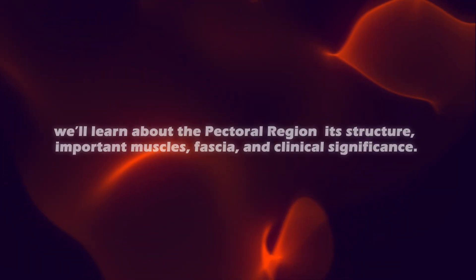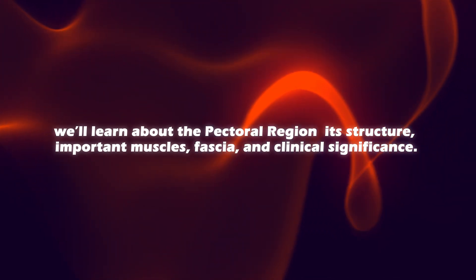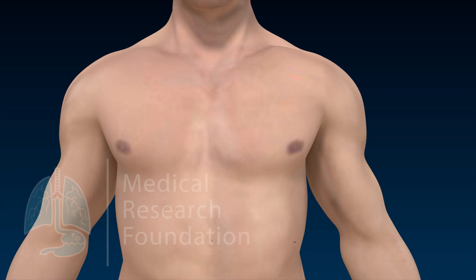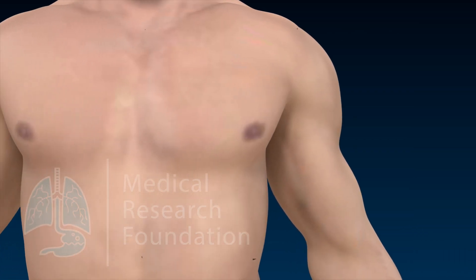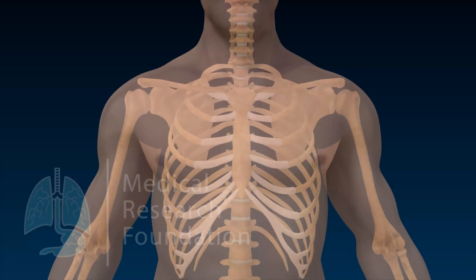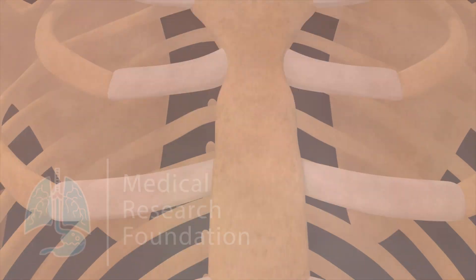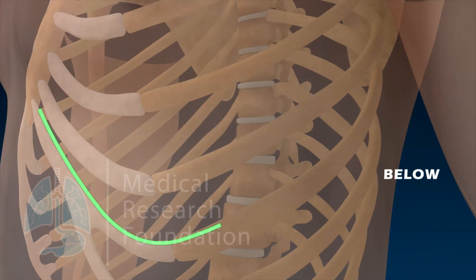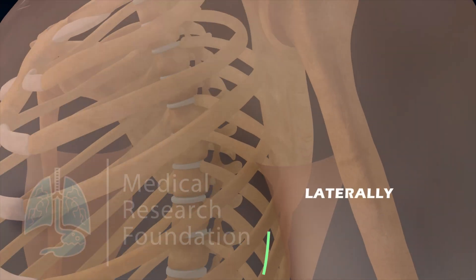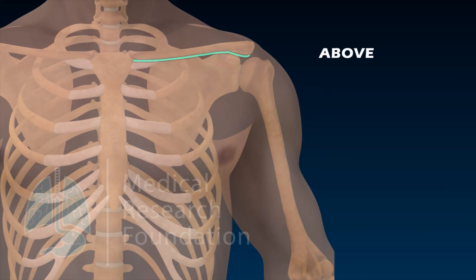Today we'll learn about the pectoral region, its structure, important muscles, fascia, and clinical significance. The pectoral region is situated in the anterior part of the thoracic cavity. Its extent: medially by the bilateral border of the sternum, below by a horizontal line drawn on the seventh rib, laterally by the mid-axillary line, and above by the clavicle.